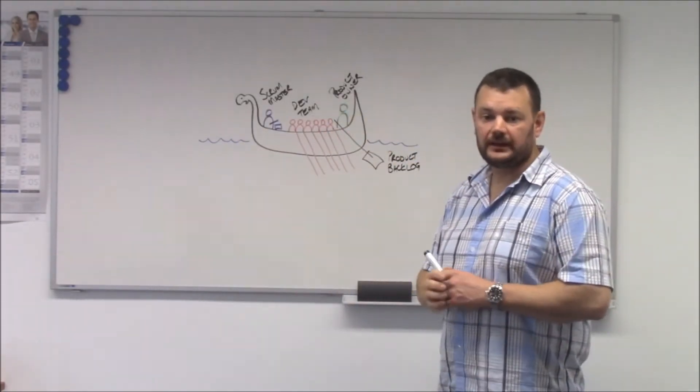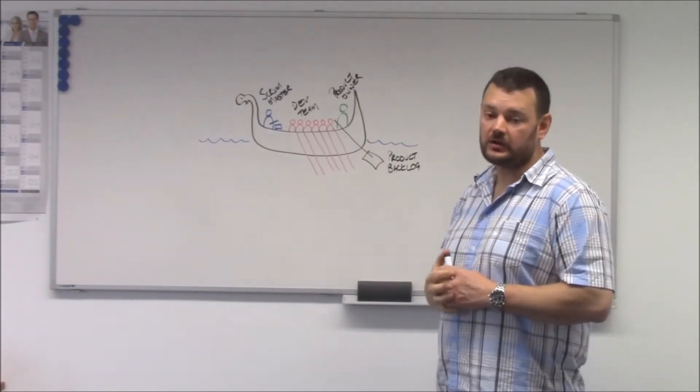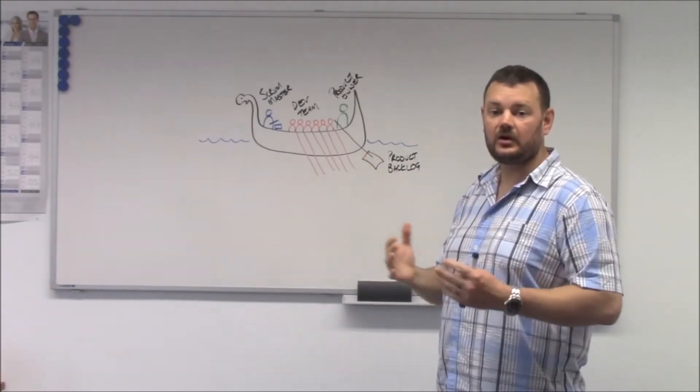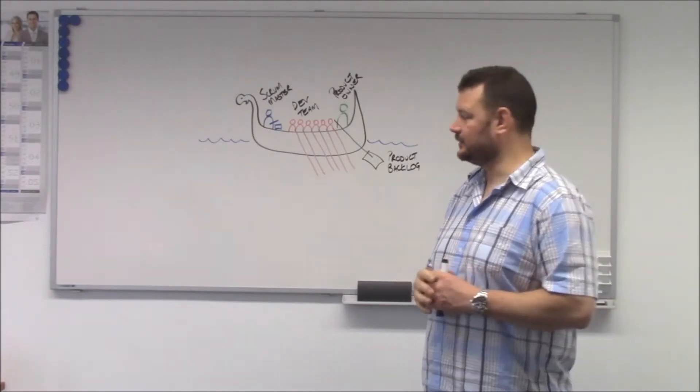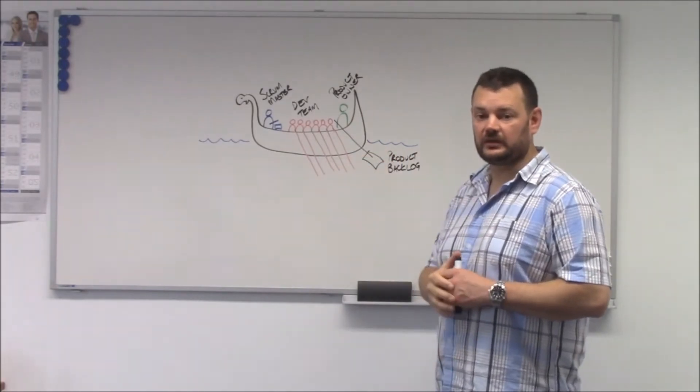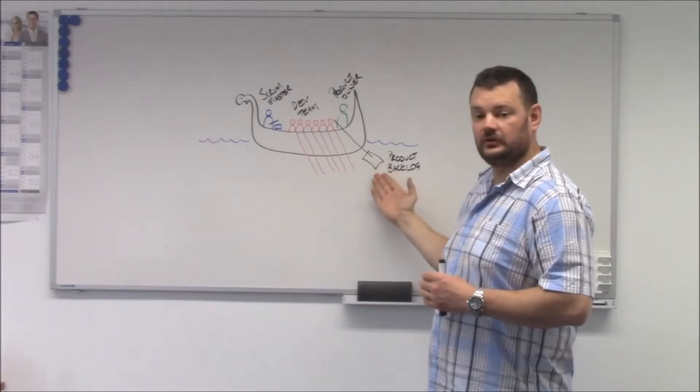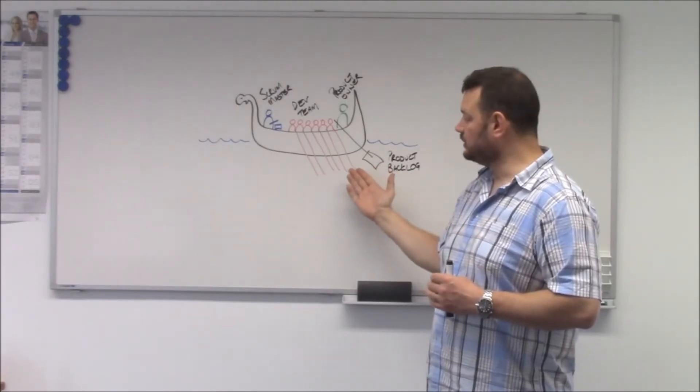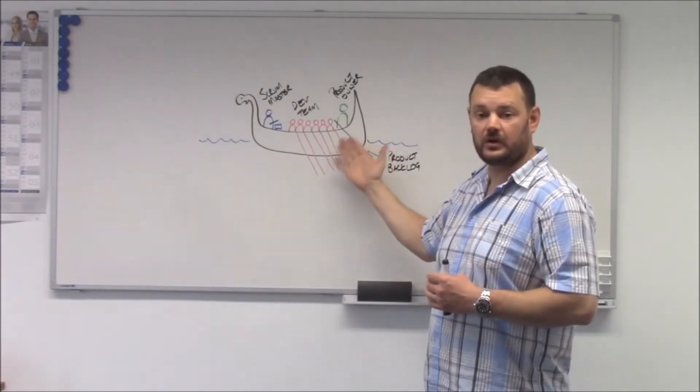The Scrum guide quite clearly states that you need these three roles filled and a very common question is can I be in two roles at once? Let's think about that. If you're the product owner can you be in the dev team? Well yes you can but what's going to happen? You're either going to lose a little bit of steering or lose a little bit of distance because you won't have that extra rowing.